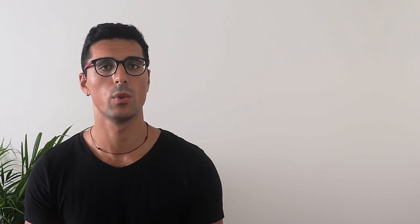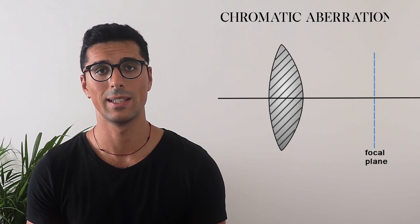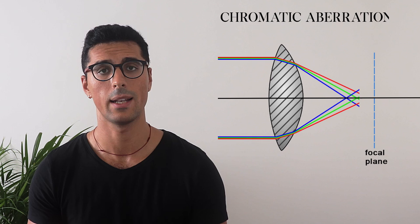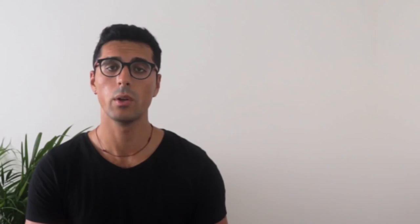The second distortion we look at is called color fringing or chromatic aberration. This happens when the lens is unable to focus all color wavelengths at a single point. As a result, the image becomes not only blurry but also has visible color shifting on the edges of the picture or subject. Interestingly, different colors travel at different speeds — for example, red has a longer wavelength than blue.